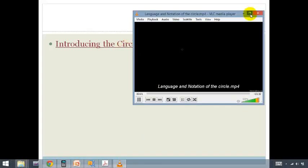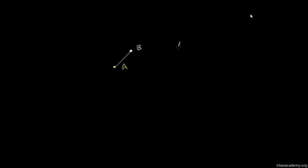Let's start with a point. Let's call that point A. What I'm curious about is all of the points on my screen right over here that are exactly 2 centimeters away from A. So 2 centimeters on my screen is about that far. Clearly, if I start at A and I go 2 centimeters in that direction, this point right over there is 2 centimeters from A. If I call that point B, then I could say line segment AB is 2 centimeters.